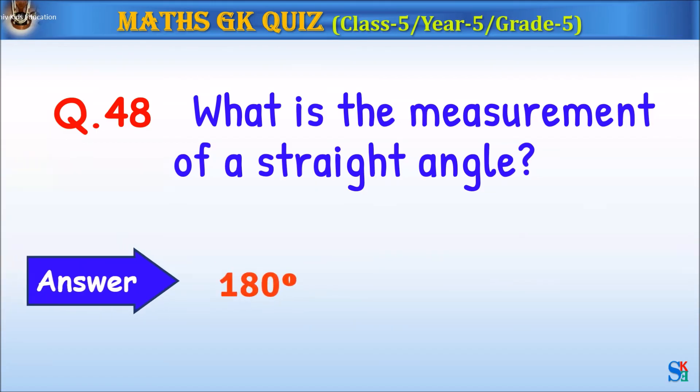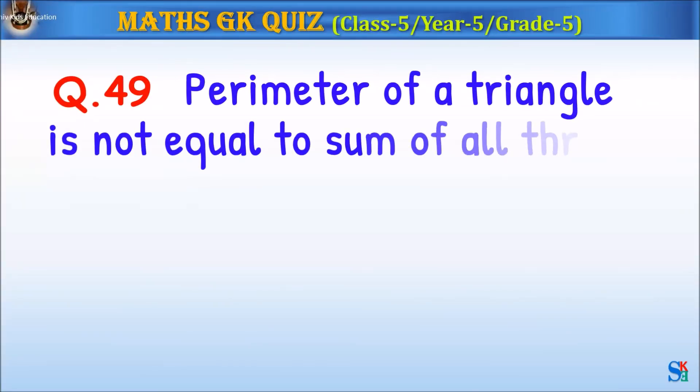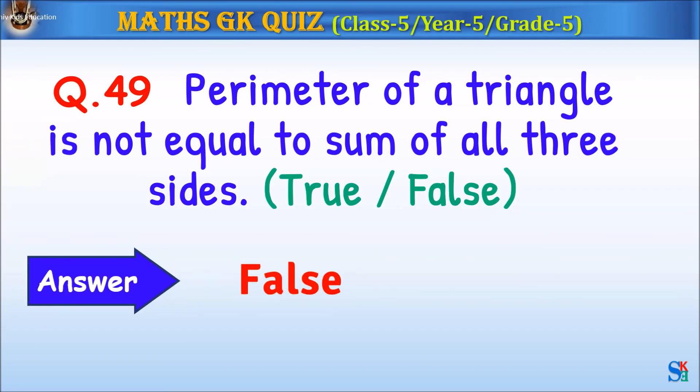Question 48: What is the measurement of the straight angle? The answer is 180 degrees. Question 49: Perimeter of a triangle is not equal to sum of all 3 sides, true or false? The answer is false.